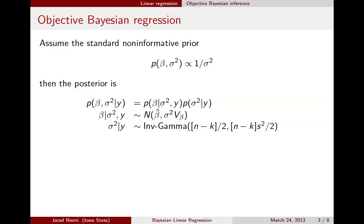We can also go ahead and find the marginal distribution for beta by integrating out sigma squared. And we'll find that beta has a t-distribution with n minus k degrees of freedom, location beta hat, and scale s squared v_beta, where this s squared here is the same as that s squared that I'll get to in a second.